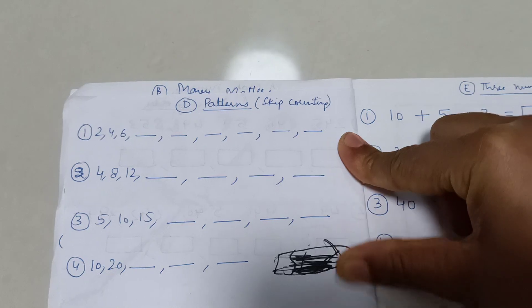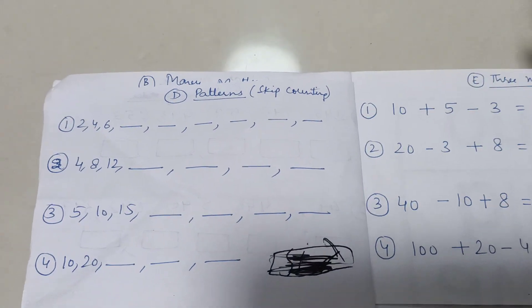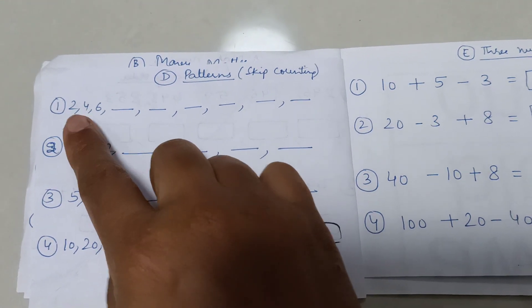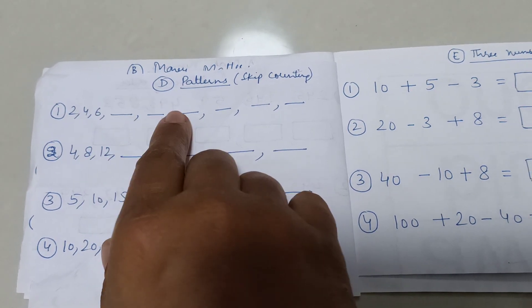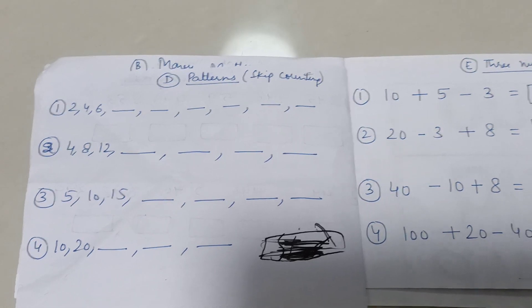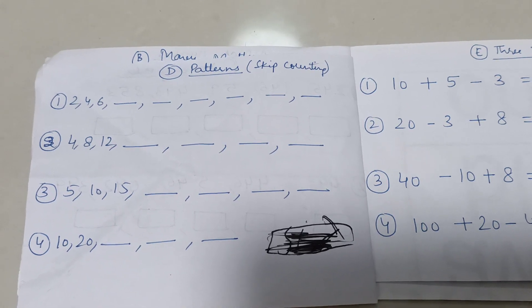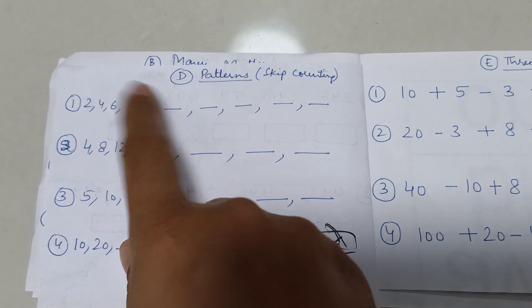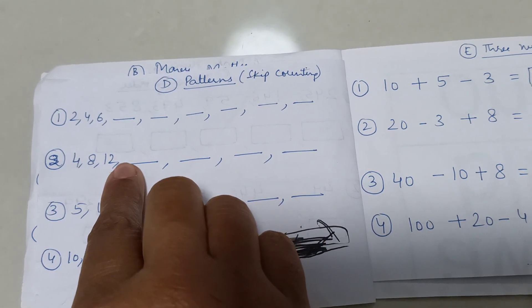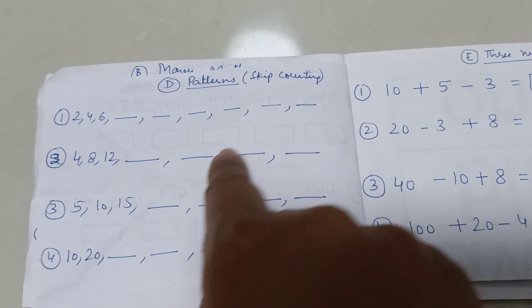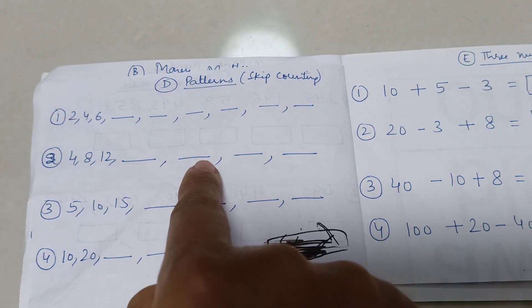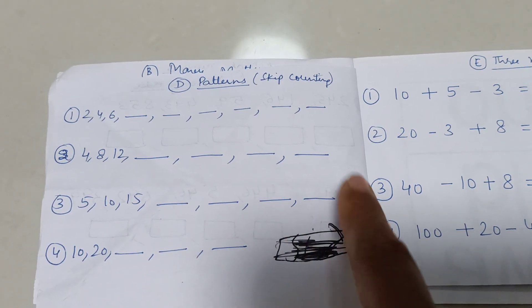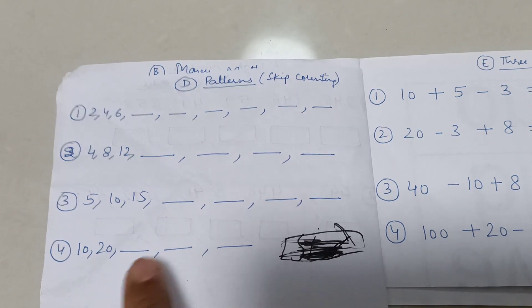Now we are doing patterns. I call it pattern, but it's actually concept of skip counting. In pattern you have to see what is the difference. Like 2, 4, 6. What is the gap? It's two gaps. So 2, 4, 6, 8, 10. I don't teach them as tables, but I just want them to get used to addition of 4, addition of 5, addition of 10. Here she has to add 2 in everything, which will be easy. This will be complicated because she is not used to add 4 too much often. 5, 10, 15, skip counting by 5 will be easy. And 10, 20, 30 will be easy for her, just skip counting by 10.